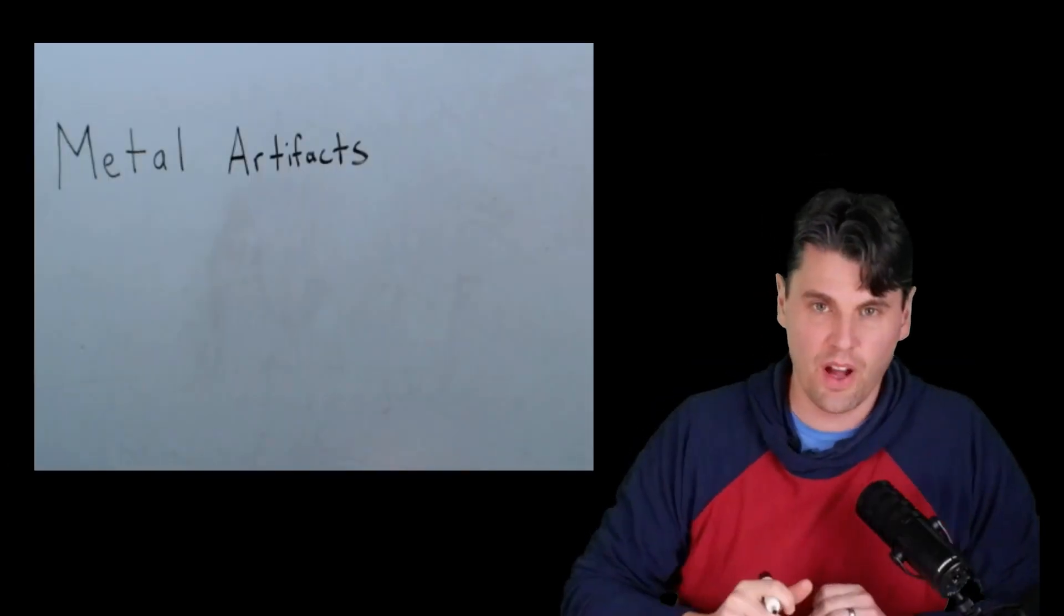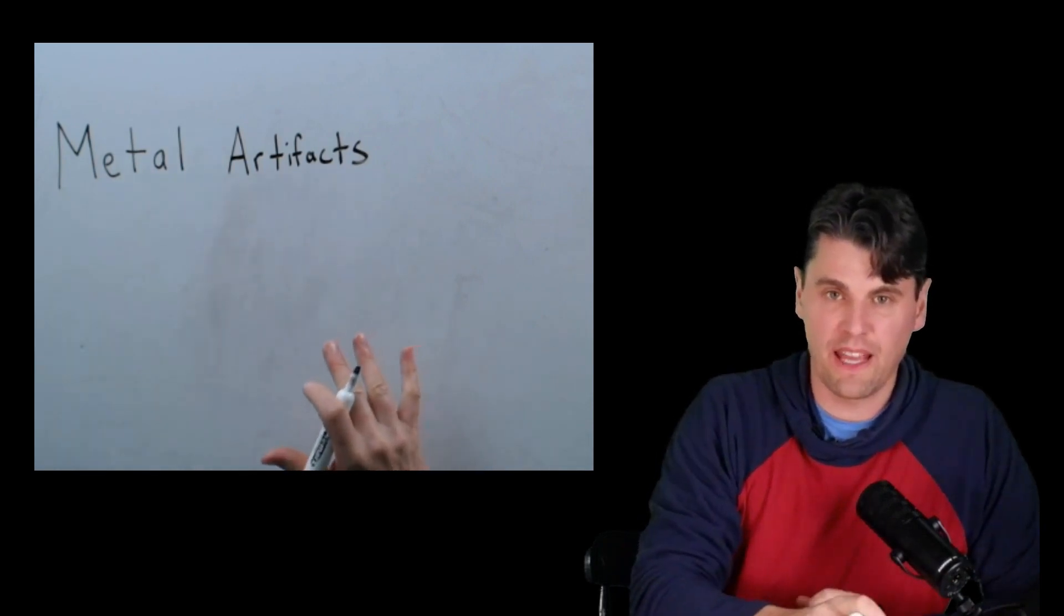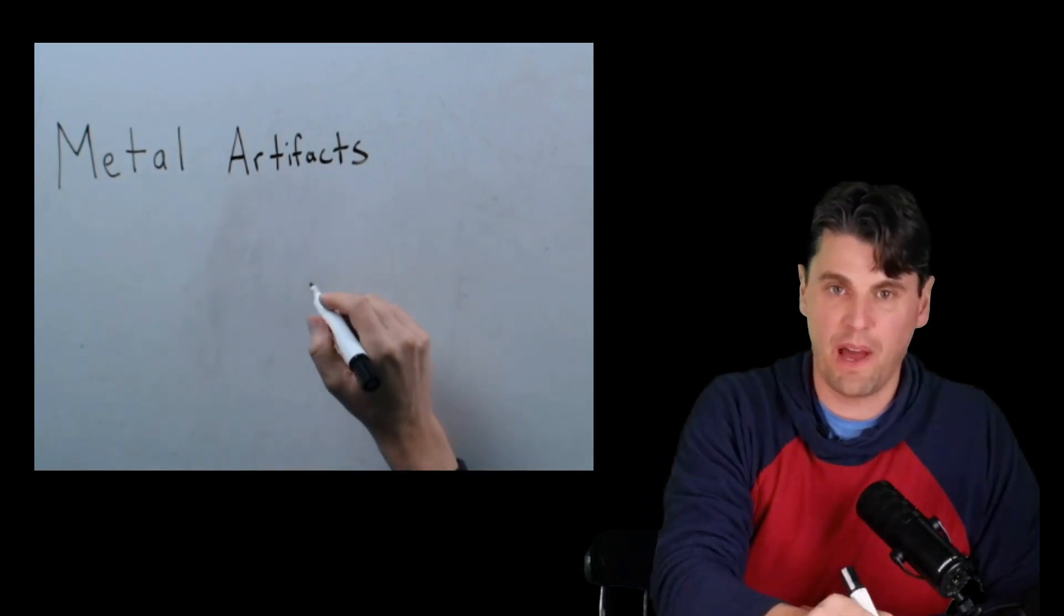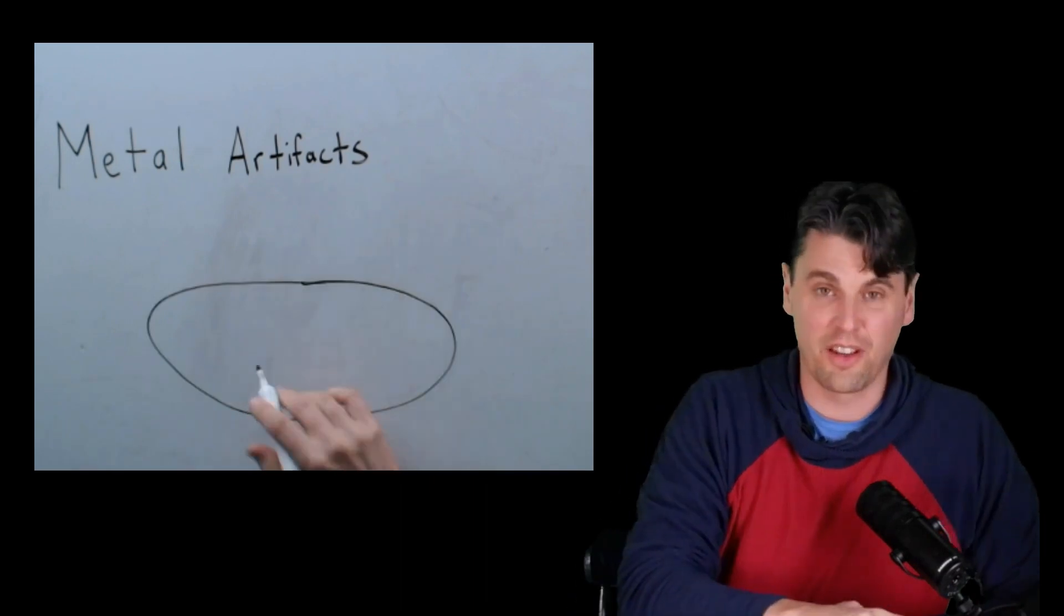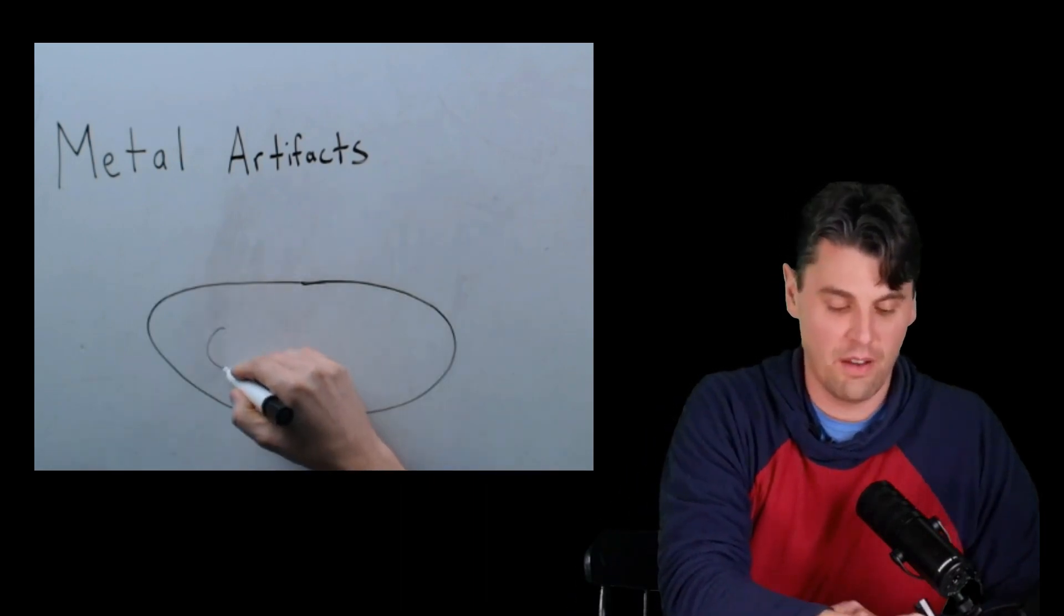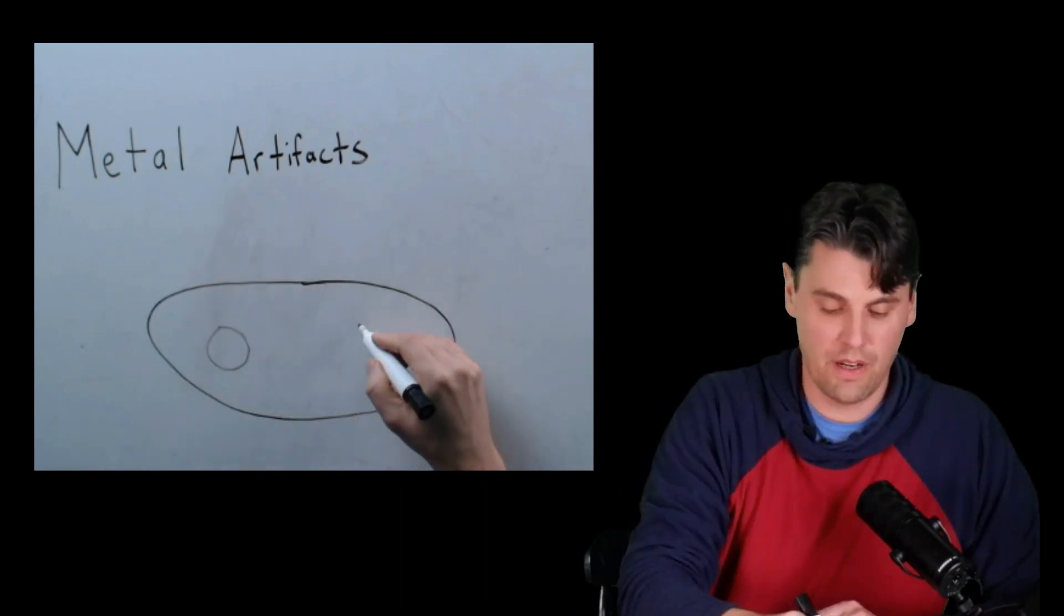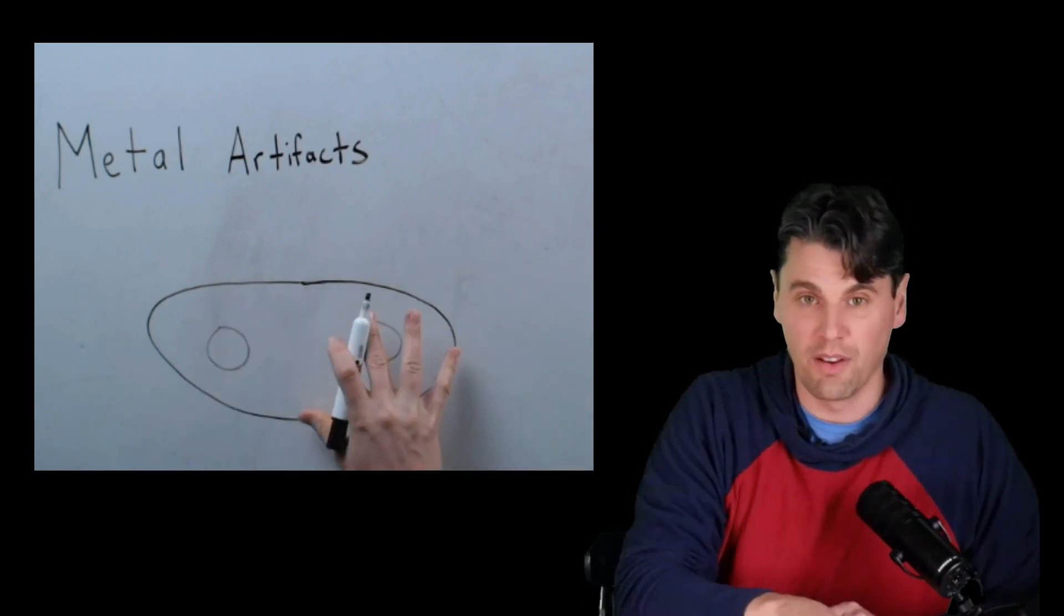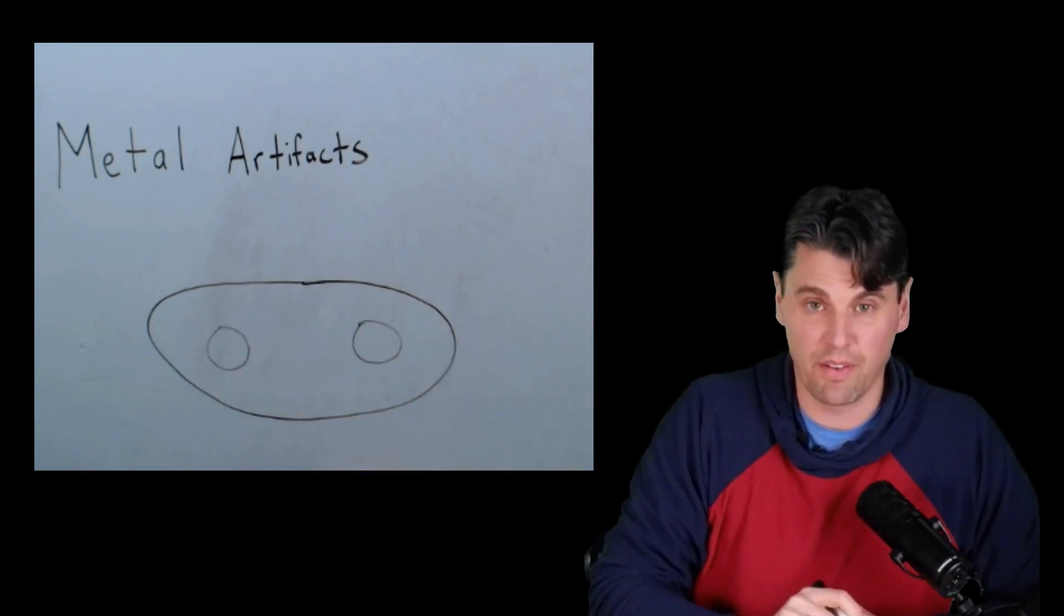So first off, metal artifacts. Imagine we're taking an image of the patient's pelvis. Here's a nice visual of the pelvis. You have a couple of hip bones here within the pelvis, and you have a bunch of soft tissue in the pelvis as well.